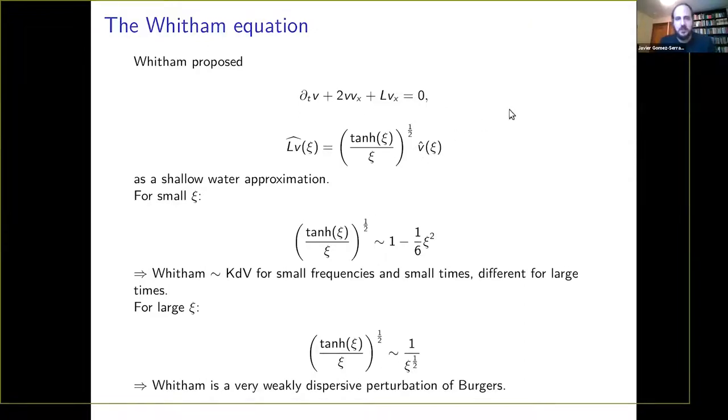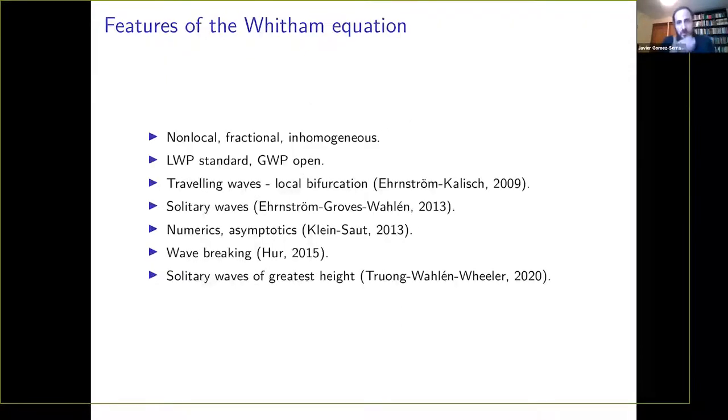KdV is obtained by taking a second degree approximation when the frequencies are small. So the suggestion which was done by Whitham was to say, well, instead of approximating it for small frequencies, just take the full symbol. So Whitham proposed the following equation, which is some kind of dispersive perturbation of Burgers, where the dispersive part, instead of taking three derivatives as in KdV, one has the multiplier given by this hyperbolic tangent of ξ over ξ. So this is what Whitham proposed and the top equation is known as the Whitham equation.